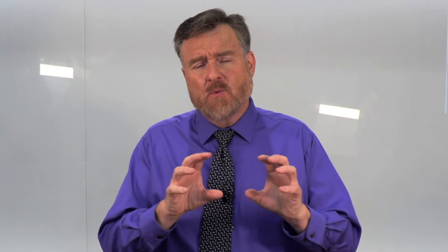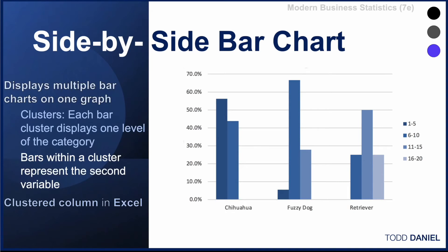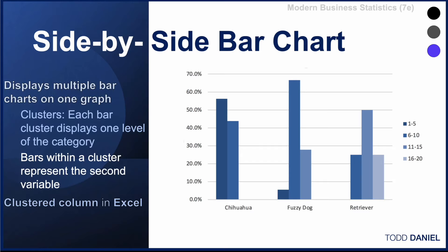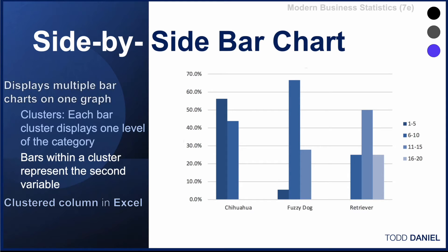But there's another form of bar chart that would allow us to see subdivisions within particular categories and look more closely at the counts available — this is called a side-by-side bar chart. On the x-axis, we see three breeds of dog. But instead of a single bar representing days to fail, we have subdivided using the breeds of dogs with the number of days to fail by its binned category. Chihuahuas are represented in the lower two categories, meaning they chewed up their toys most quickly. Fuzzy dogs are kind of in the middle, and retrievers on the upper end. We're not seeing individual bars but rather clusters, and each bar cluster displays one level of the category. The bars within the cluster represent the second variable — in this case, the binned quantitative variable.